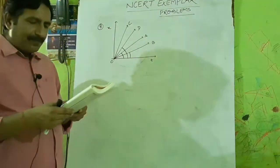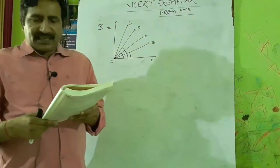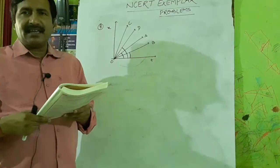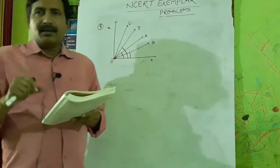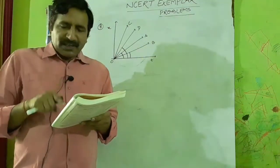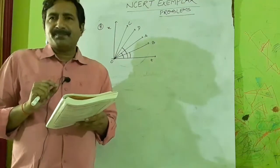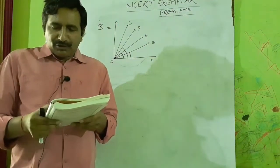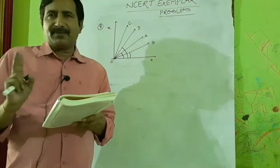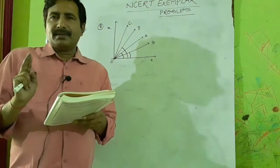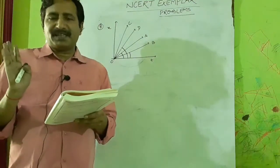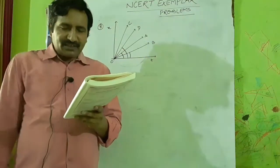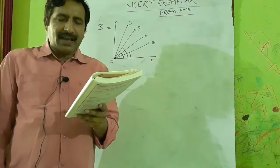Question nine: Which of the following figures represents uniform motion correctly? In option A, the distance-time graph is a straight line inclined to the time axis. Uniform motion means a straight line on a distance-time graph representing constant speed, so A is the correct option.